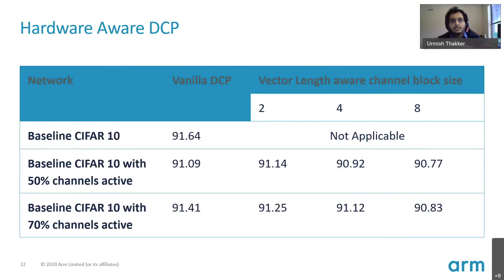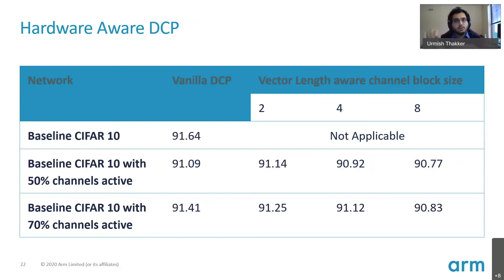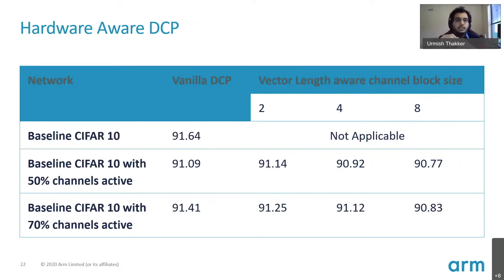We are able to push to a vector length awareness of block size 8 — forcing dynamic channel pruning techniques to remove channels in blocks of 2, 4, or 8 — and we still maintain most of the baseline accuracy compared to vanilla dynamic channel pruning. So we get hardware-aware speedup without losing network accuracy.